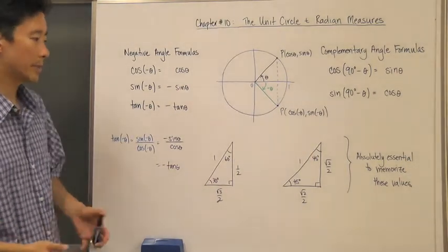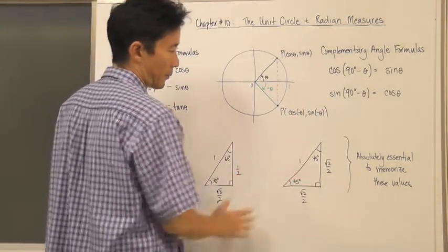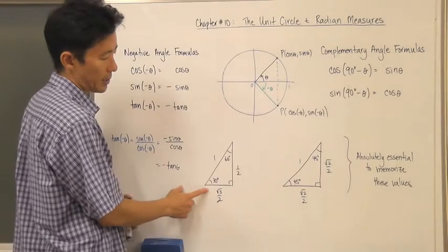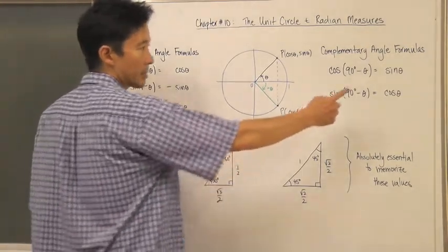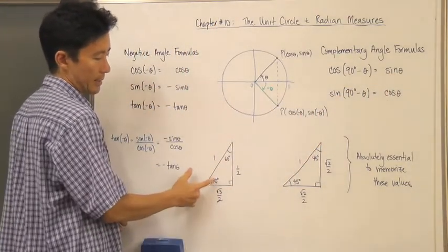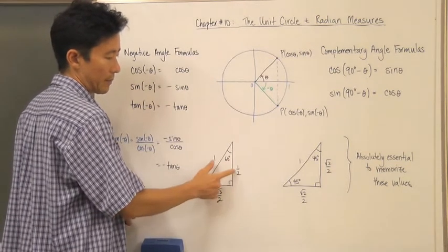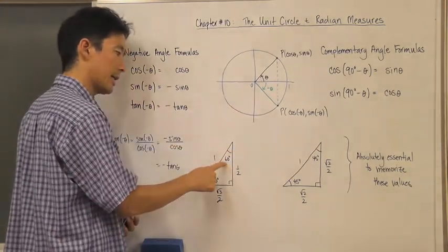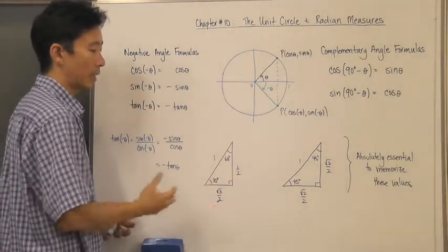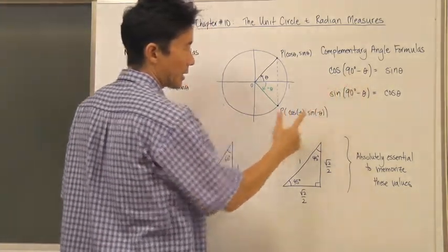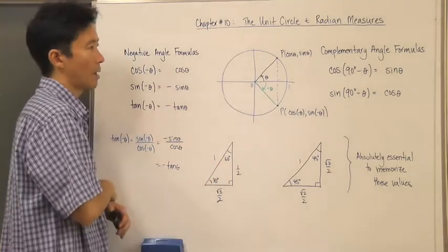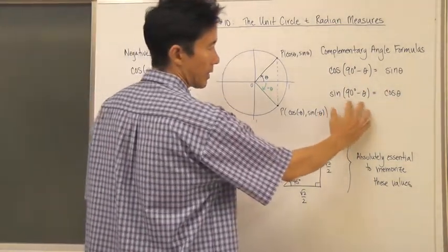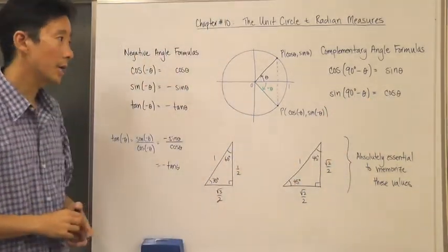Now let's look at the complementary angle formulas. Cosine of 90 degrees minus theta equals sine of theta. For example, if theta is 30 degrees, then sine of 30 is one-half. Looking at it from the other side, that's the same as cosine of 60 degrees. This works because 90 minus theta is always the complementary angle in a right triangle. So cosine of (90° - θ) = sin(θ), and similarly, sine of (90° - θ) = cos(θ).